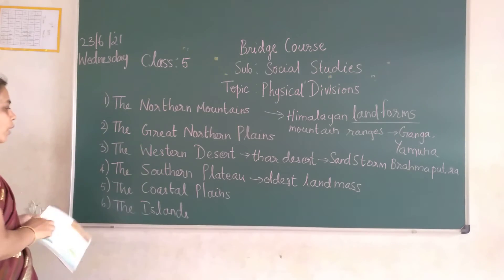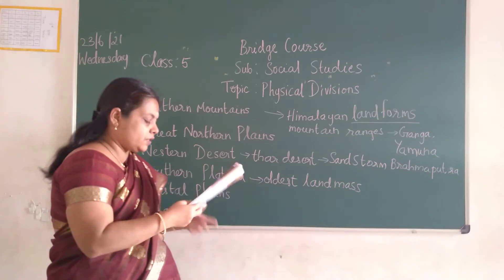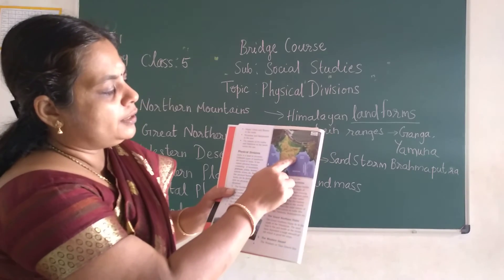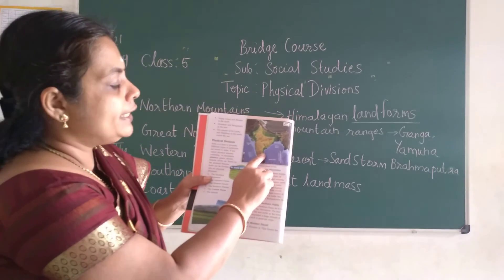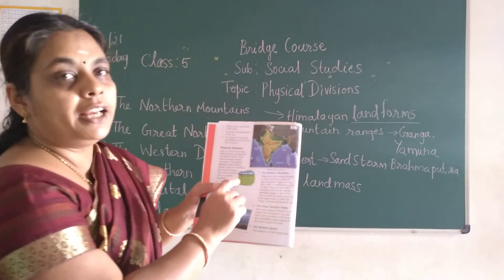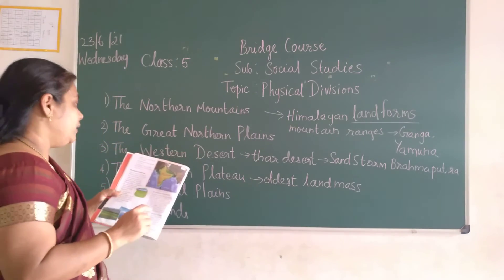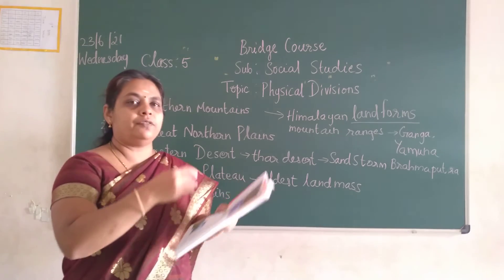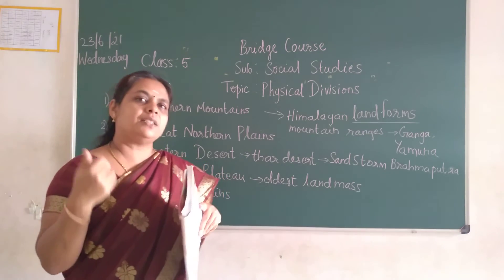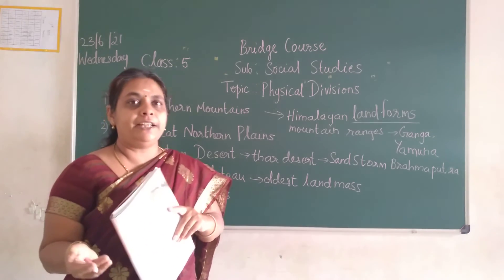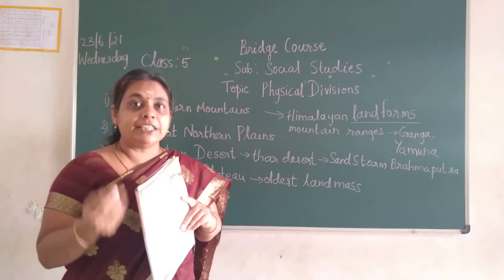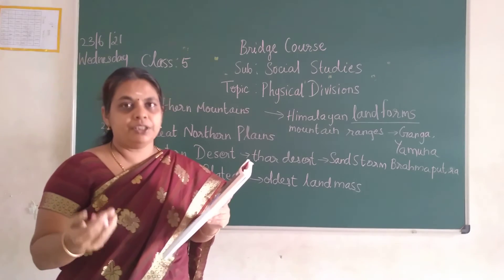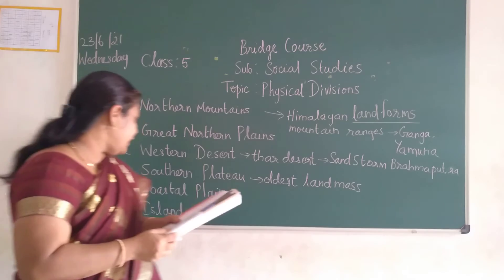The next one is the coastal plains. After the southern plateau, on the sides near the sea — both on the western side and the eastern side — you have the western and eastern coastal plains. They are also fertile because rivers flow through the eastern parts. On the eastern side, rivers like Godavari, Krishna, and Kaveri form deltas, making it a very fertile region.